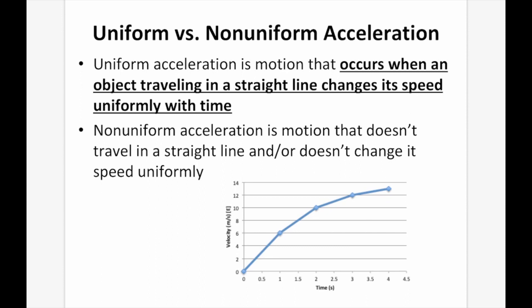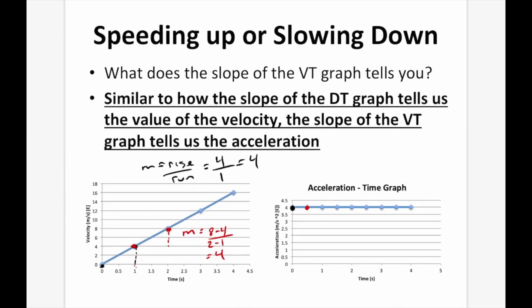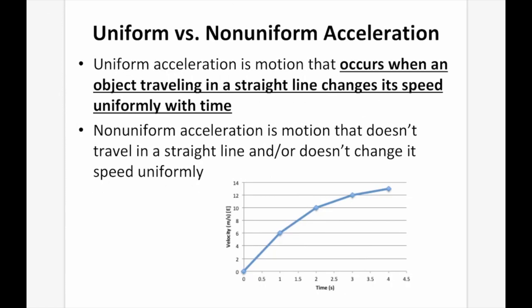Uniform acceleration is motion where an object traveling in a straight line changes its speed uniformly with time. Non-uniform acceleration is motion that doesn't change speed uniformly — the object could be changing speed faster or slower. On a VT graph showing non-uniform acceleration, the change in velocity between 0 and 1 is greater than between 1 and 2, so the acceleration between those intervals is greater. The object is still accelerating, just at a decreasing rate — this is non-uniform acceleration.